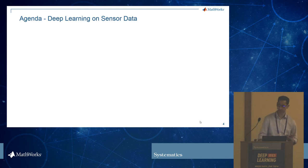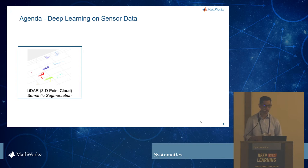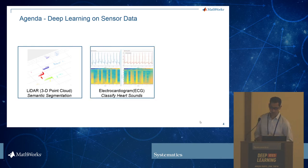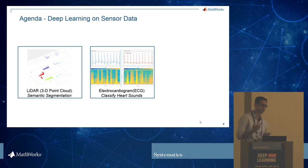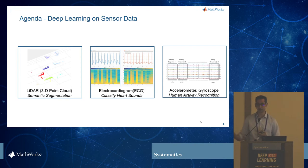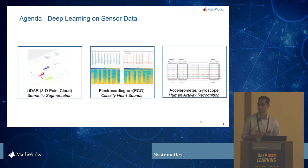I'm going to show three examples. The first will deal with point cloud data — 3D LIDAR data. We'll deal with some ECG data, which is continuous signal data, and we'll try to classify different heart sounds to figure out whether someone is in danger of cardiac failure or has arrhythmia. Lastly, we'll deal with data from a cell phone — the accelerometer and gyroscope — and I'll show a few different techniques to process each of these.